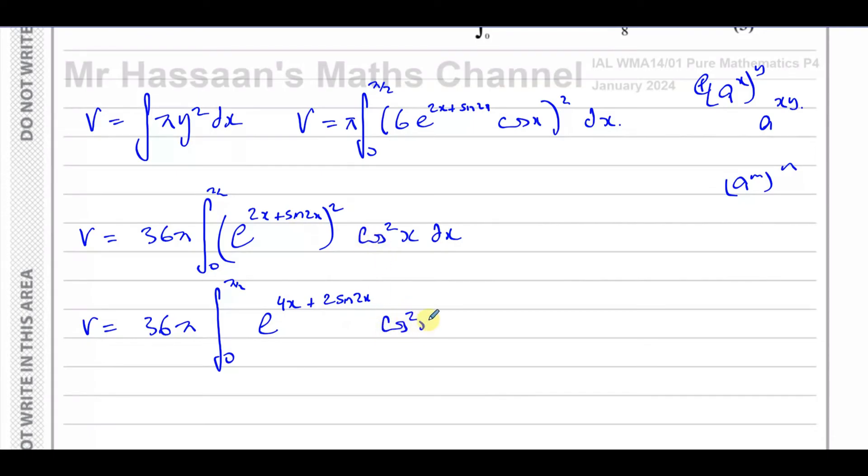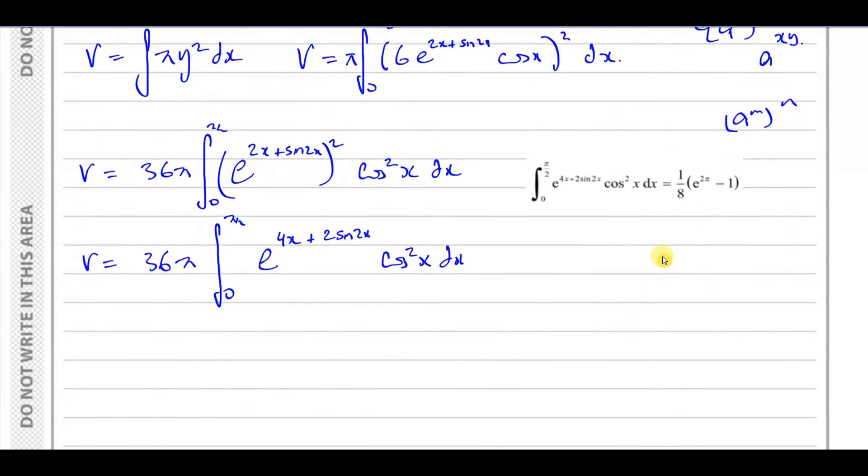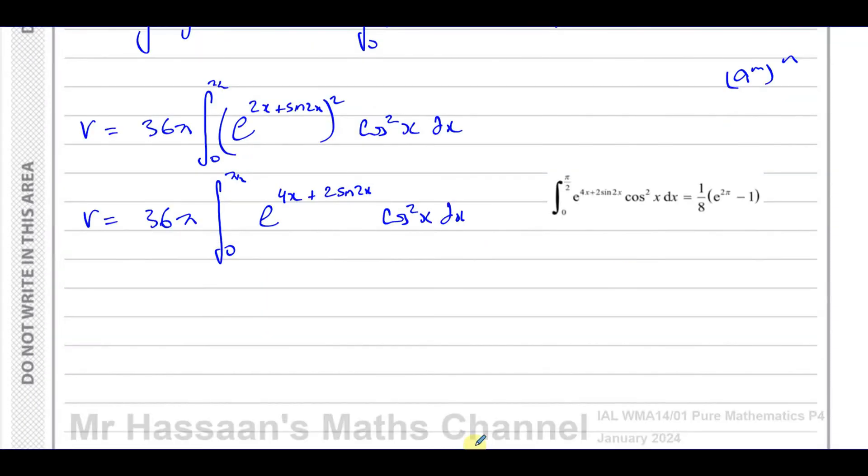If we look at our answer from the previous part of the question, where it says use the answer to part A, if we look at this answer here, this is exactly the same as we got in here. The integration has already been done with the same limits, so we can just replace all of this with 1 over 8 e to the power of 2π minus 1.